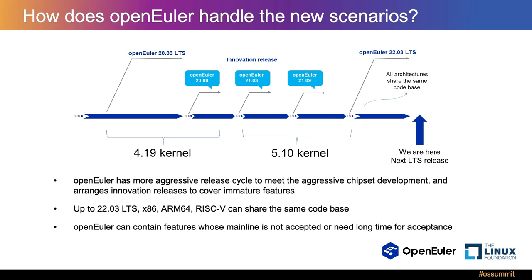So if you want to try something new or verify some chipset, you can go very early into the Innovation version cycle, do the verification, and then go back to your LTS version. We will adopt a more aggressive release cycle to meet the pace of aggressive chip development. We will adopt a very aggressive strategy to adopt new features, even those that spend a very long time getting into upstream. We also share the same code base across all versions.